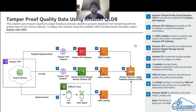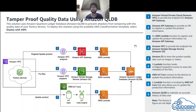Today we are going to see how you can give tamper-proof data and secure your data. People talk about blockchain and different other technologies to achieve tamper-proof data. Today we are going to talk about one of the AWS services called QLDB — Quantum Ledger Database.